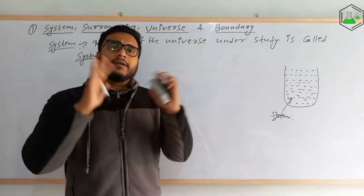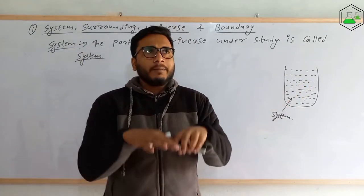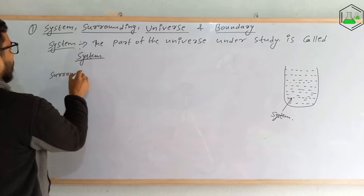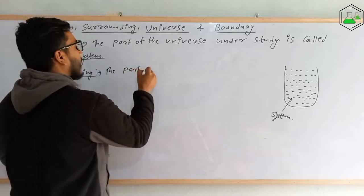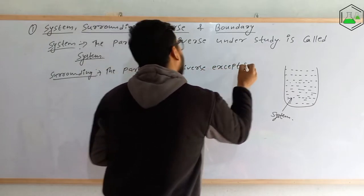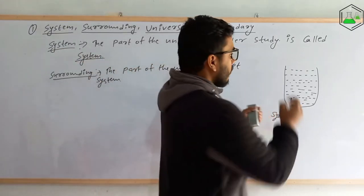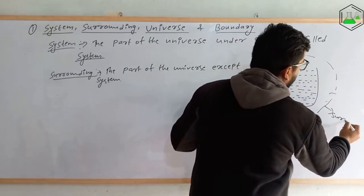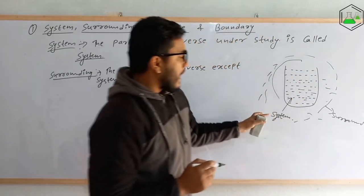Surrounding means the part of the universe except the system part. If you remove the system part, whatever part is remaining in the universe is called the surrounding. So surrounding is defined as the part of the universe except the system. Any part outside the system is called surrounding.